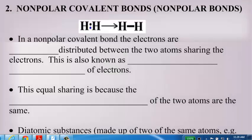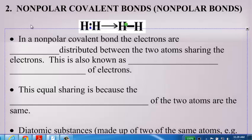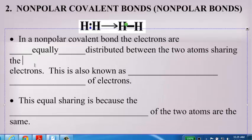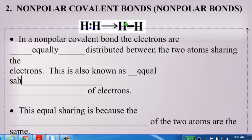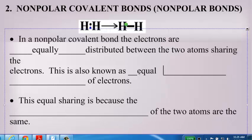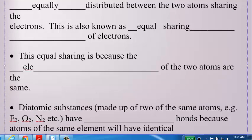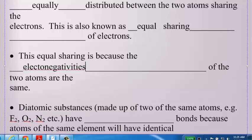The second type of covalent bond that we have to talk about is a non-polar covalent bond. And in a non-polar covalent bond, the electrons are shared equally. They're equally distributed between the two atoms. We also call this equal sharing of electrons. Equal sharing would occur if the electronegativities of the two atoms are the same.